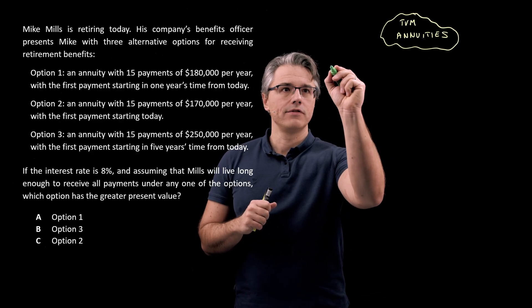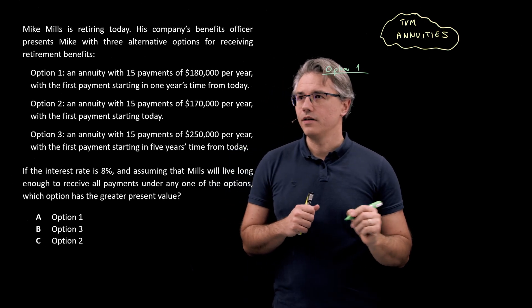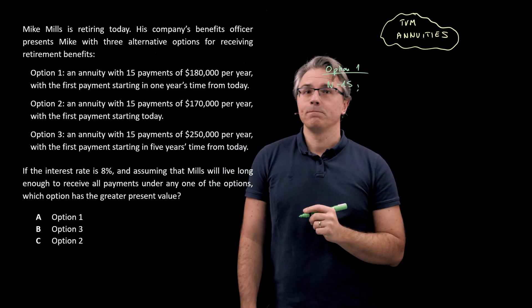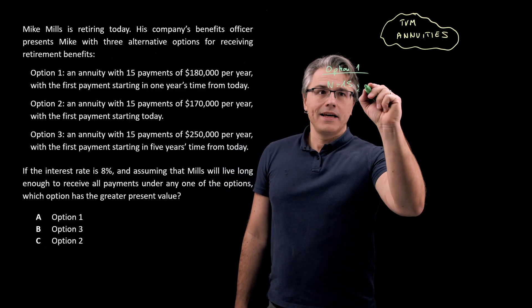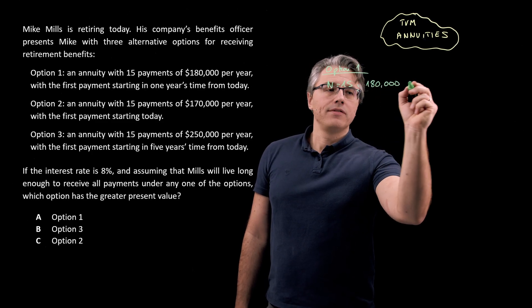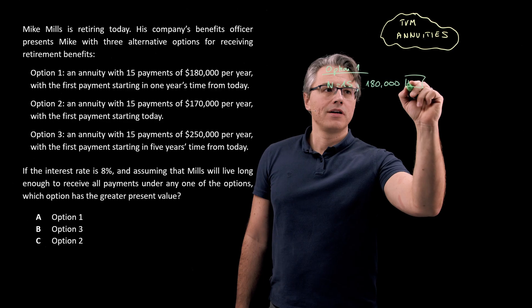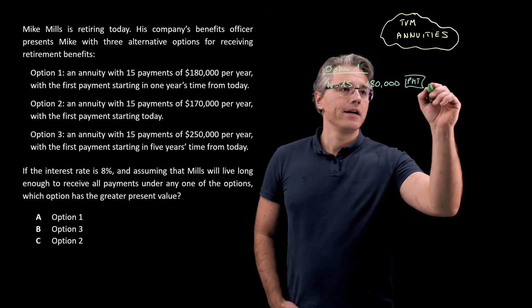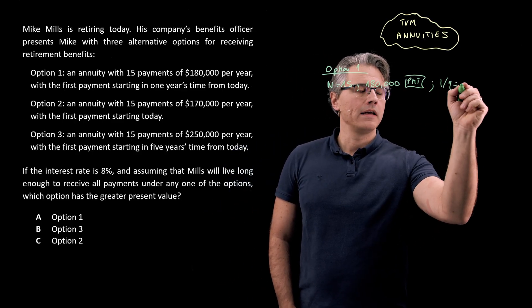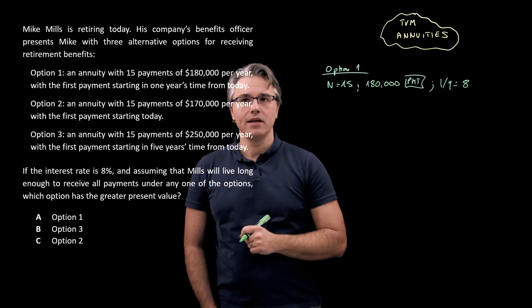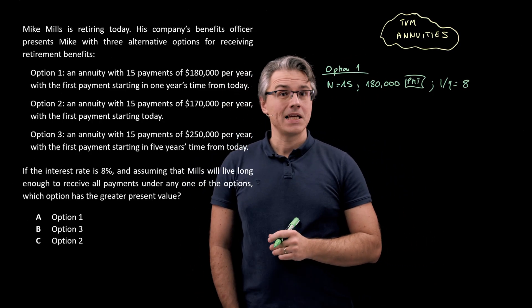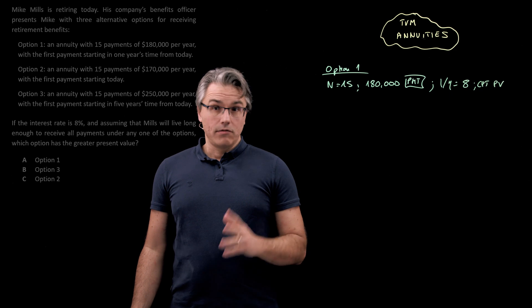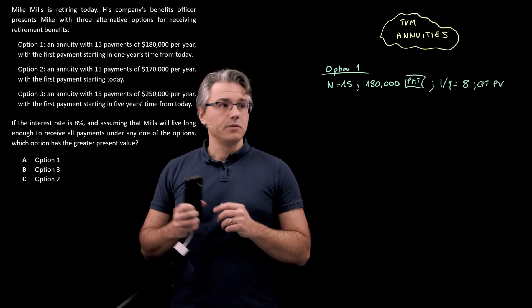So option one, let's start with this one. For option one, I'm going to have the following inputs: N is going to be 15. Now, $180,000, that's what we're going to use for PMT. So you're going to input 180,000 followed by the PMT key. I over Y is going to equal 8, that's the interest rate. And there will be no FV, but we'll be trying to compute for PV, CPT PV.